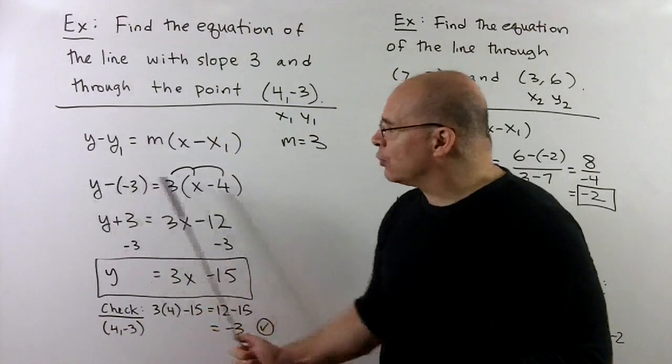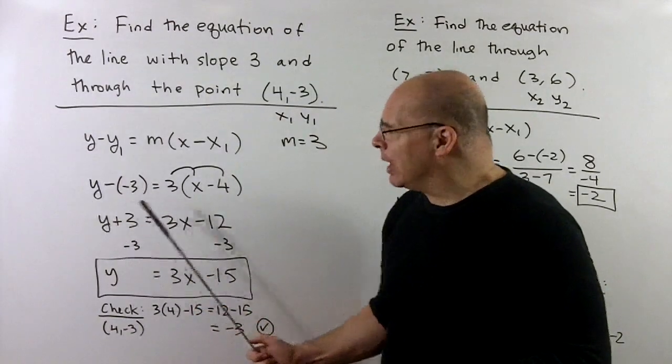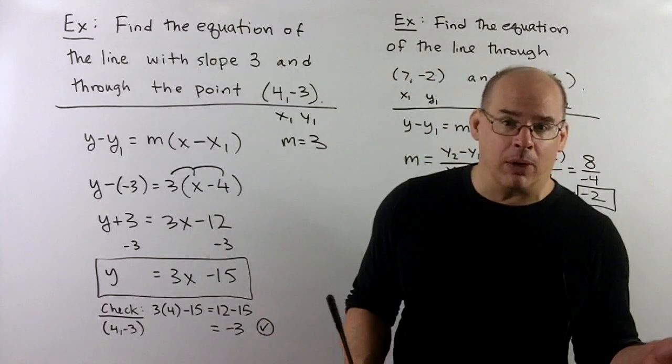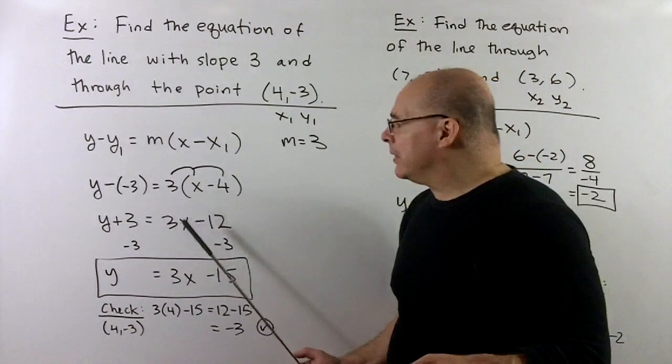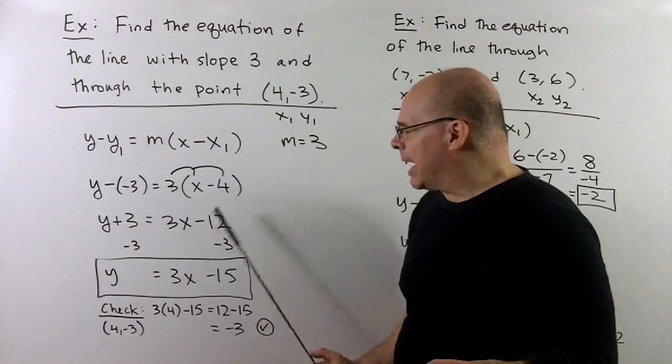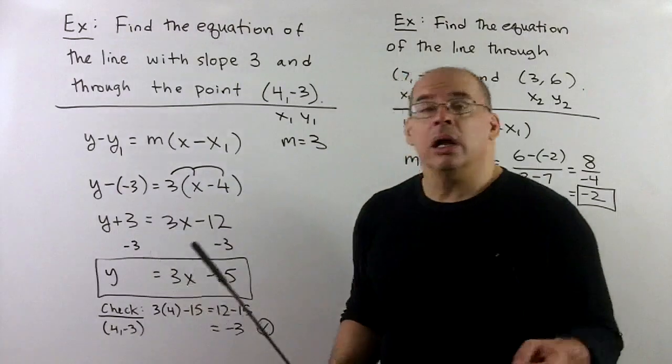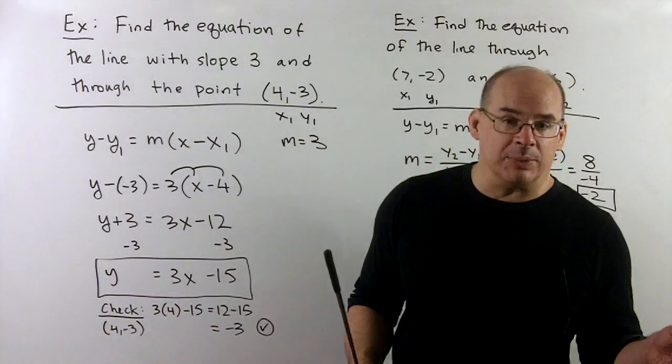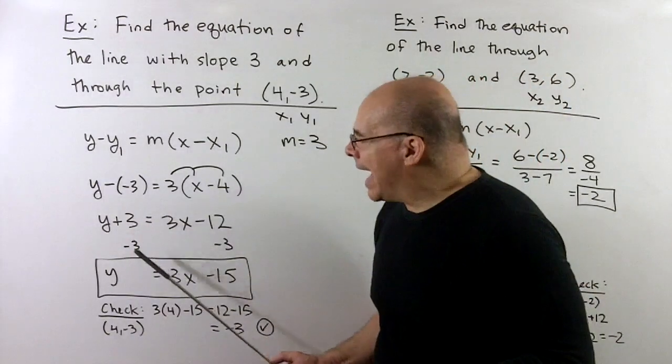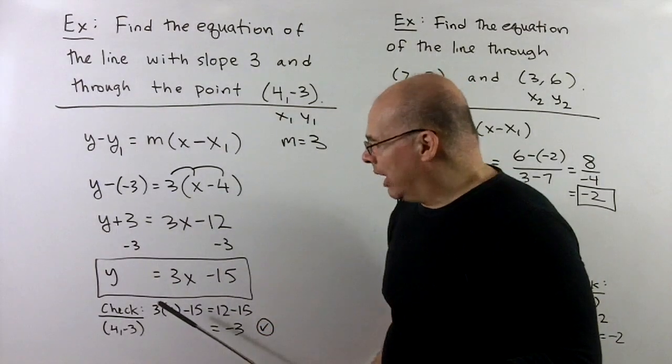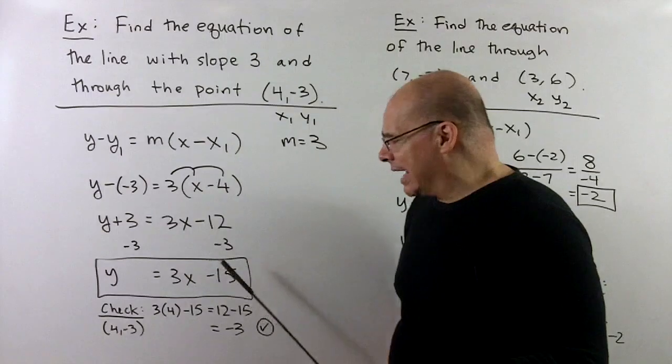And then I can go to work. So going from left to right, we have y plus 3, and then I need to distribute the 3 to everything in the parentheses. So that's going to be 3x, and then 3 times minus 4 is a minus 12. From here, we want to go to y equals mx plus b. So I'm going to add minus 3 to both sides to isolate the y, and then we wind up with y equals 3x minus 15.